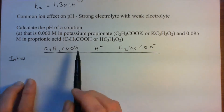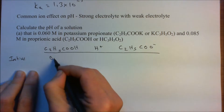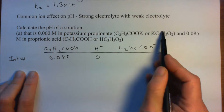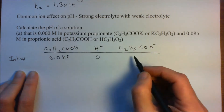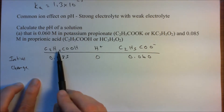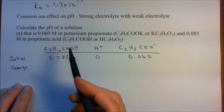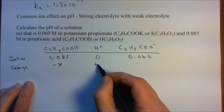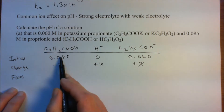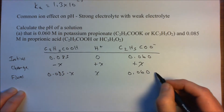The initial concentration of the acid is 0.085 molar. There is no initial concentration of H⁺. The initial concentration of the propionate ion — the conjugate base — is 0.060 molar. Since we're in equilibrium with the acid, the change row is: we lose some acid (−X), gain some H⁺ (+X), and gain some propionate ion (+X). So the equilibrium row is 0.085 − X, X, and 0.060 + X.